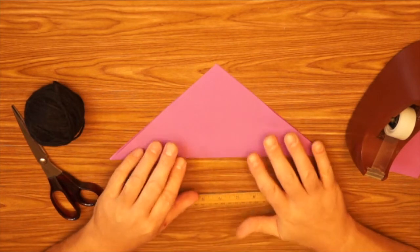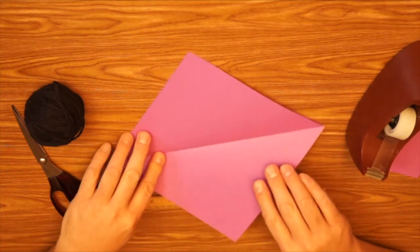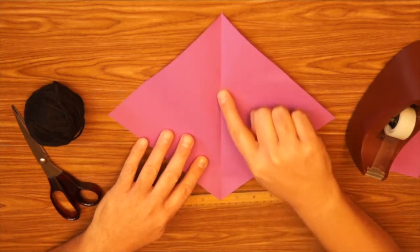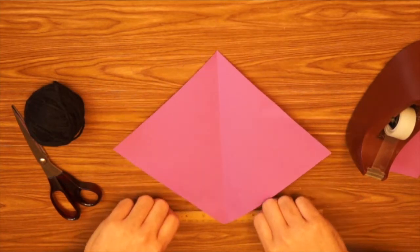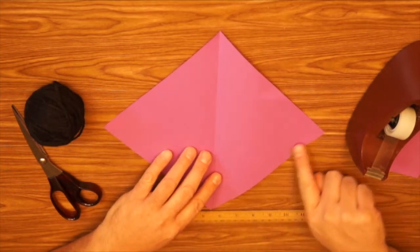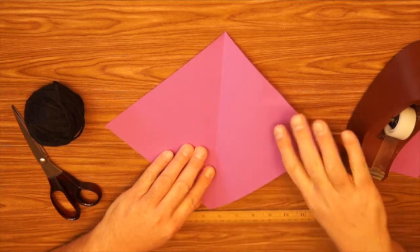Okay, we take the triangle and open it back up to a diamond shape and turn it so that the crease is vertical. And then we're going to fold the bottom right over until it lines up down the center.